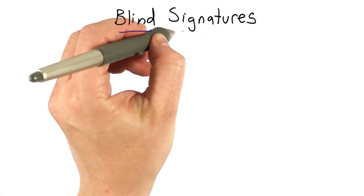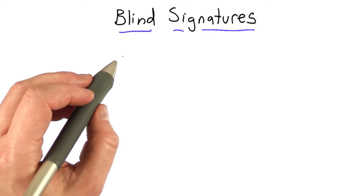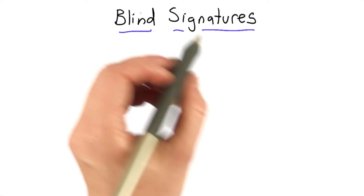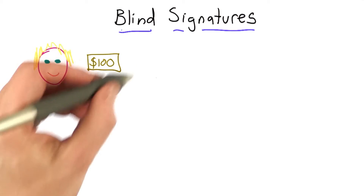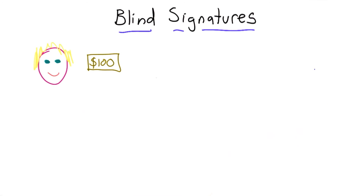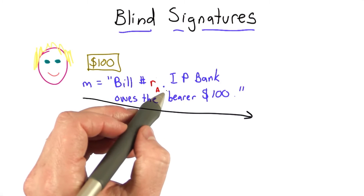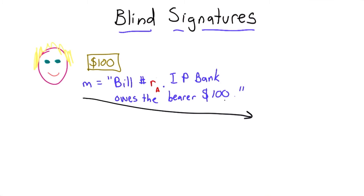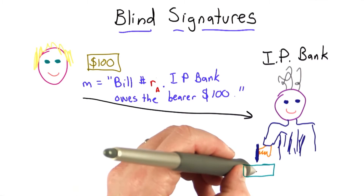The solution to this is a technique known as blind signatures. This gives us a way to associate a unique ID with a bill to detect double spending, but doesn't allow the bank to associate the unique IDs on the bills with the person who acquires that bill. Alice will deposit her $100 in the bank, and along with the bills she'll generate a message that says bill number RA — some unique ID generated by Alice — stating that Indivisible Primes Bank owns the bearer $100. She'll go to the bank and give the banker the $100 bill and ask the bank to sign the message M.